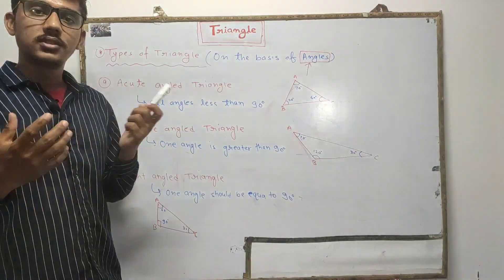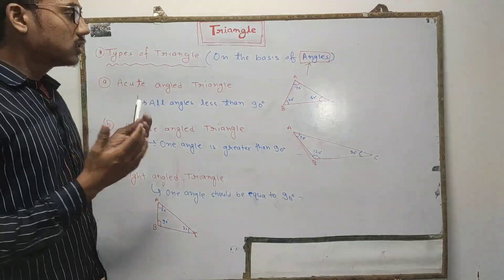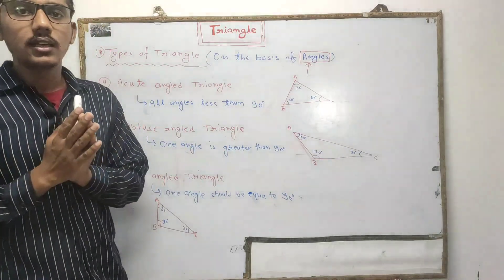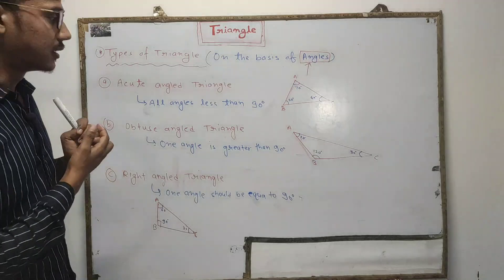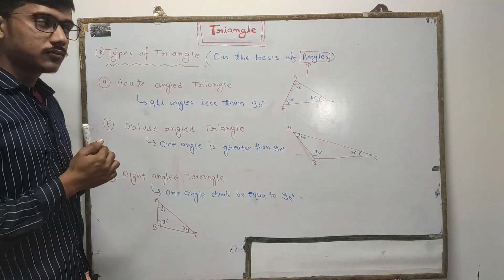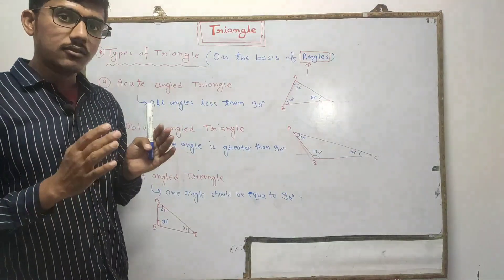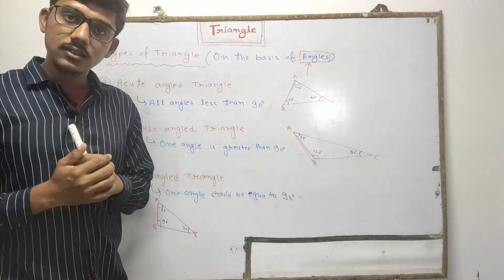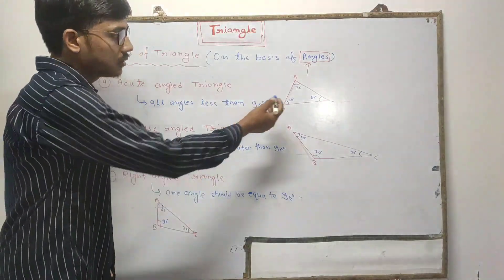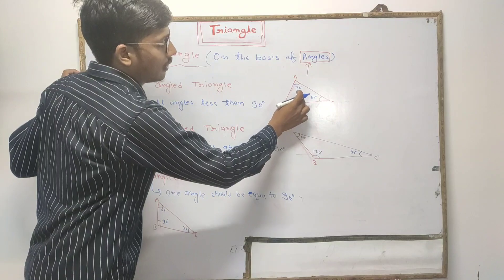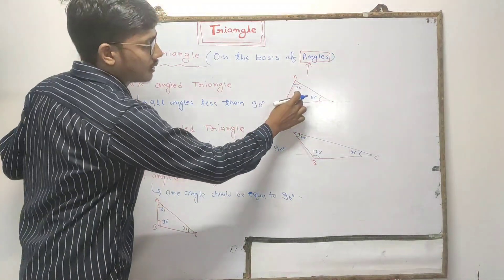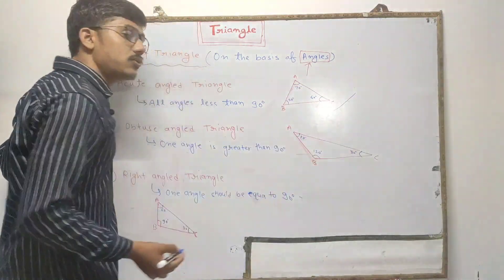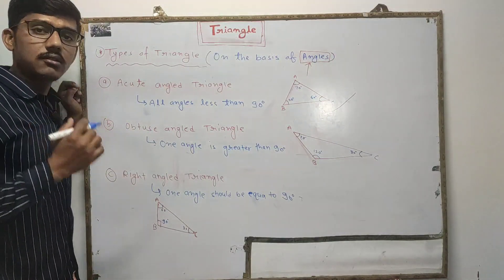Now let's understand types of triangle on the basis of angles. There are three types: acute angle triangle, obtuse angle triangle, and right angle triangle. An acute angle triangle is a triangle in which all angles are less than 90 degrees. For example, angle A is 70°, angle B is 50°, and angle C is 60° — all less than 90° — so this is an acute angle triangle.